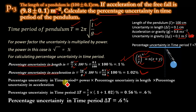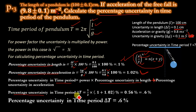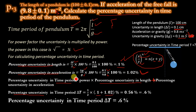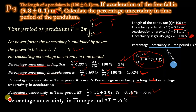For calculating the percentage uncertainty in time period, we multiply the power by the sum of percentage uncertainties in length and acceleration: (1/2) × (0.1 + 1.02)% = 0.56%. Rounding this number, we get 0.6%. So the percentage uncertainty in the time period of the pendulum is 0.6%.